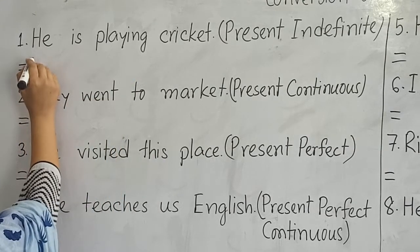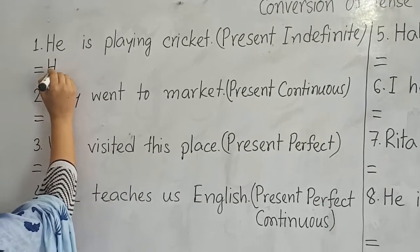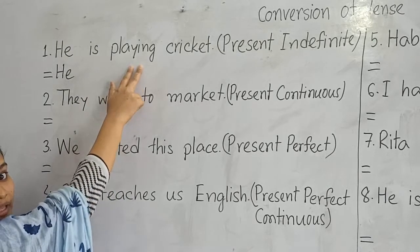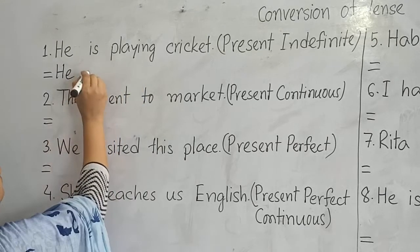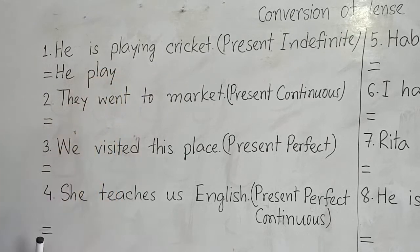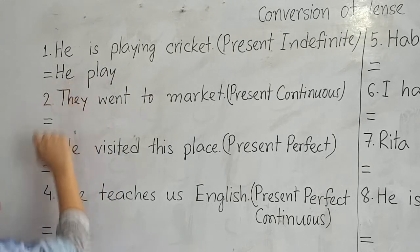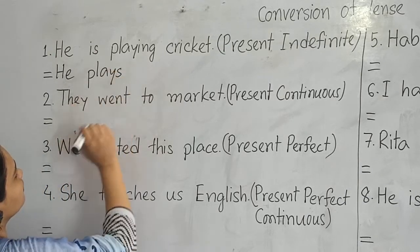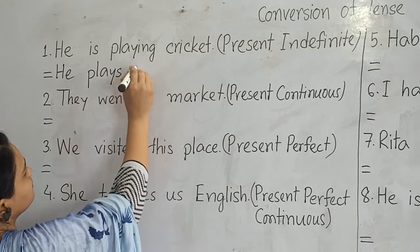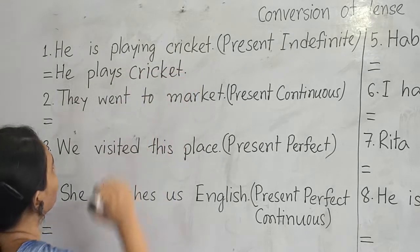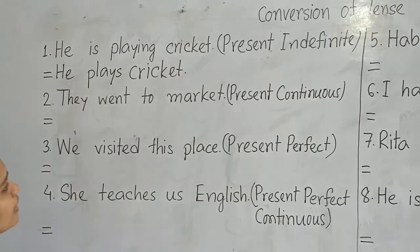We will write the subject here — our subject will be the same: 'He.' According to the structure, we will write the base form of the verb 'play.' Our subject is third person singular number, so we will add 'S' here — 'plays.' And now the rest of the sentence: 'cricket.' So it's done.